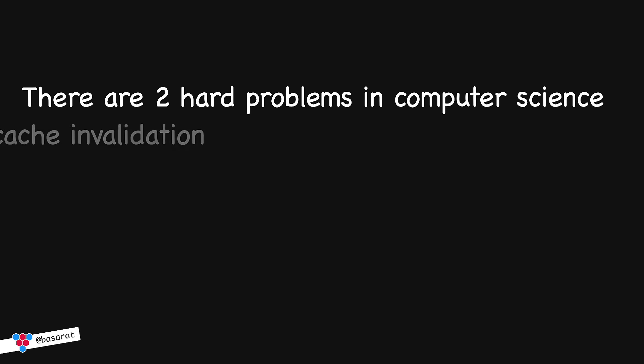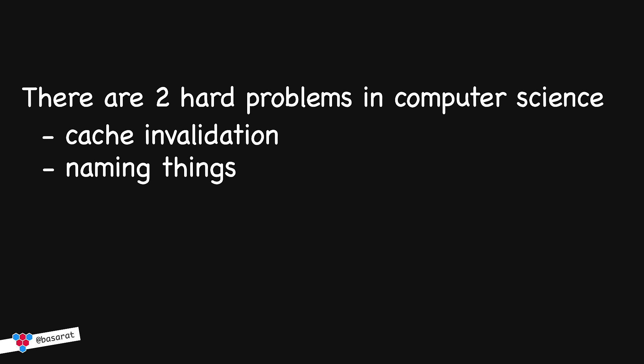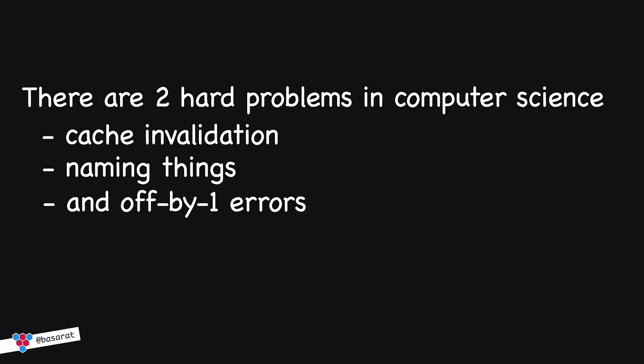There are two hard problems in computer science: cache invalidation, naming things, and off by one errors.